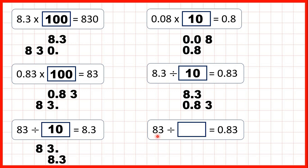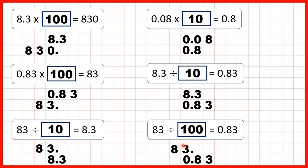Now 83 divided by what equals 0.83. We write 83 and put our decimal point on the end, then write the answer directly below with the decimal points lined up. We can see that the digits have moved two squares to the right, and that means we've divided by 100, because in 100 we have two zeros and the digits move two squares. Dividing by 100 is like dividing by 10 and then by 10 again, and that's why the digits move two squares to the right.